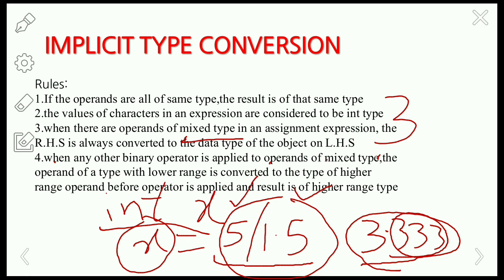We can convert a lower data type to a higher data type, but converting a higher data type to a lower data type results in loss of information. Here, 3.333 is truncated to integer format, which has a lower range than float, so the fractional part is removed and the answer is 3.